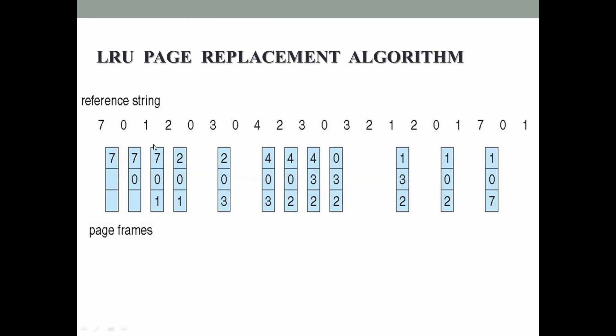Next page reference is 2. Now the LRU page replacement algorithm applies - the page not used for the longest period of time will be replaced. Pages in memory are 7, 0, and 1. Looking at the past page references: 1, 0, 7 - seven comes last in the past references, meaning 7 has not been used for the longest period of time. So replace 7 with 2.